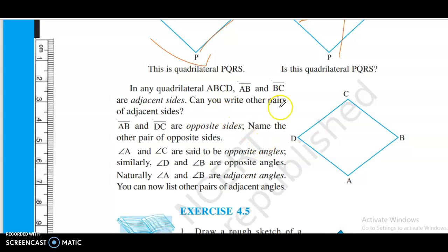In quadrilateral ABCD, AB and BC are adjacent sides. Can you write the other pairs of adjacent sides? AB and DC are opposite sides. Name the other pair of opposite sides.